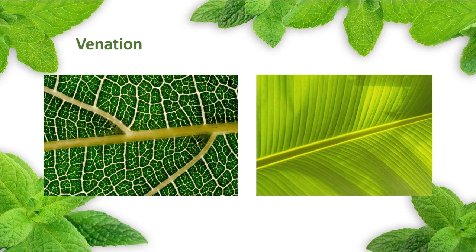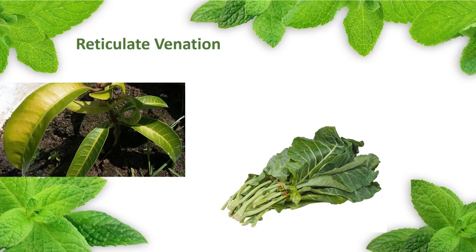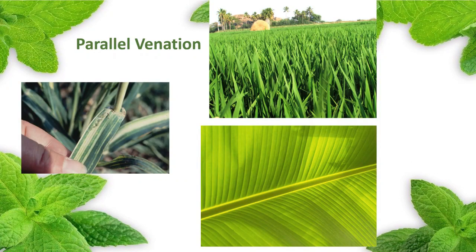3. Venation — the arrangement of veins and veinlets in the leaf blade is called venation. Venation is of two types: reticulate venation and parallel venation. 1. Reticulate venation — when the veins and veinlets are irregularly distributed forming a network, it is called reticulate venation. This type of venation is found in the leaves of mango and mustard. 2. Parallel venation — when veins run parallel to each other from the base to the apex in the leaf blade, it is known as parallel venation. Examples: rice, banana, and wheat.